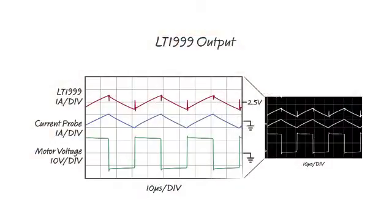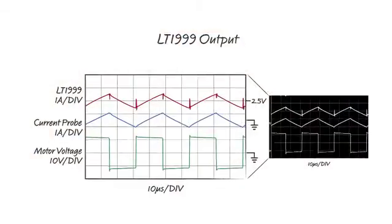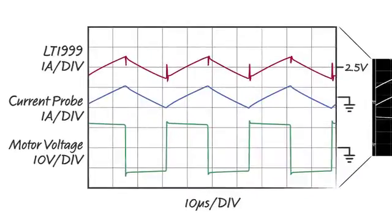The top trace shows the output of the LT1999, and it's set to 1 amp a division. The next trace is the output of the current probe, also set to 1 amp a division. And the bottom trace is again the voltage across the motor, set to 10 volts a division. The first impression is that the output of the LT1999 very accurately matches the output of the current probe, with no false alarms.